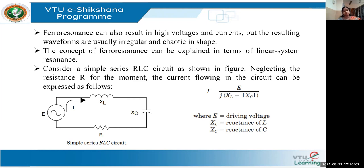In ferroresonance, the operating level is jumping from one operating point to another operating point. That is the major difference between resonance and ferroresonance — you are seeing a sudden shift of the operating point from one level to another level.